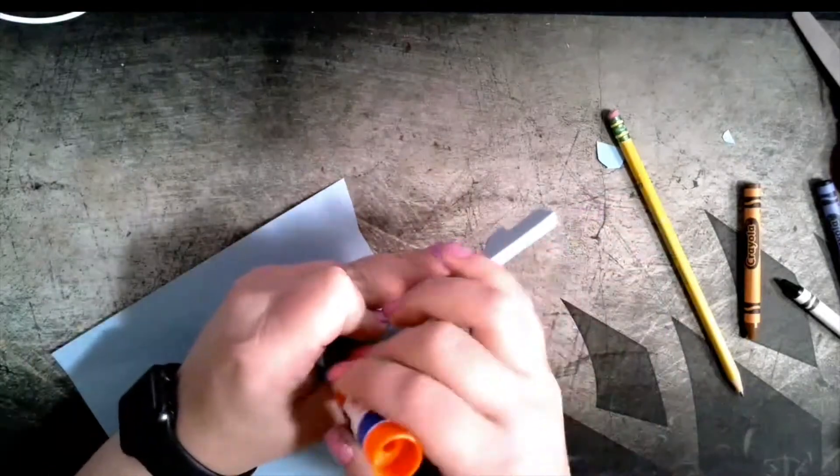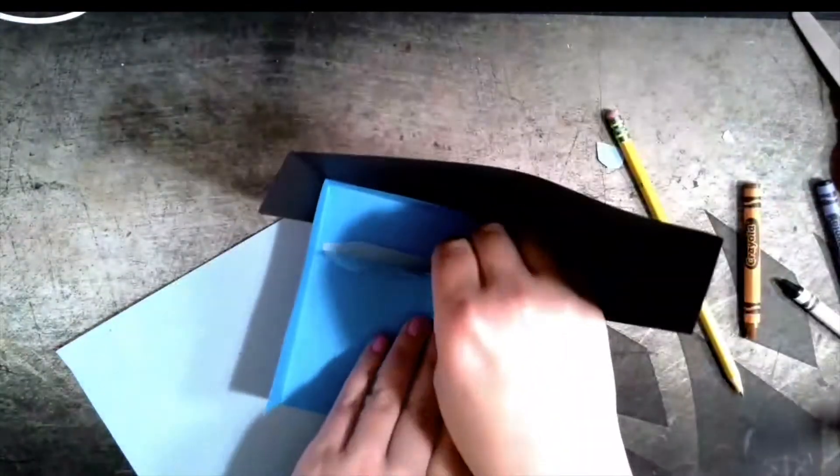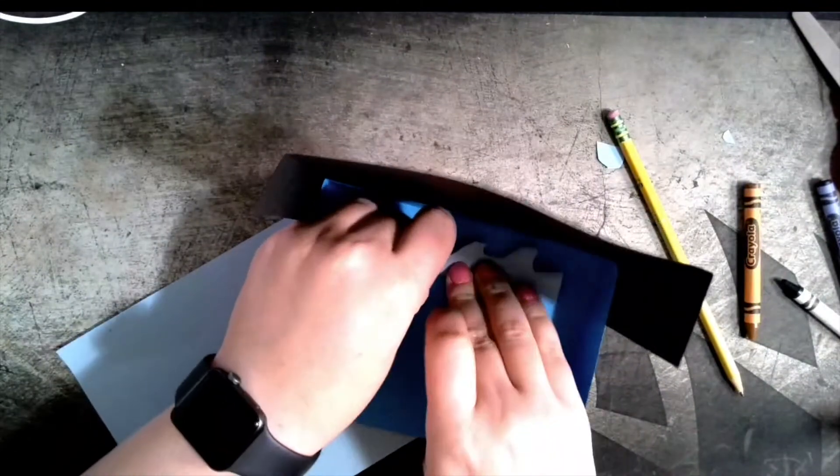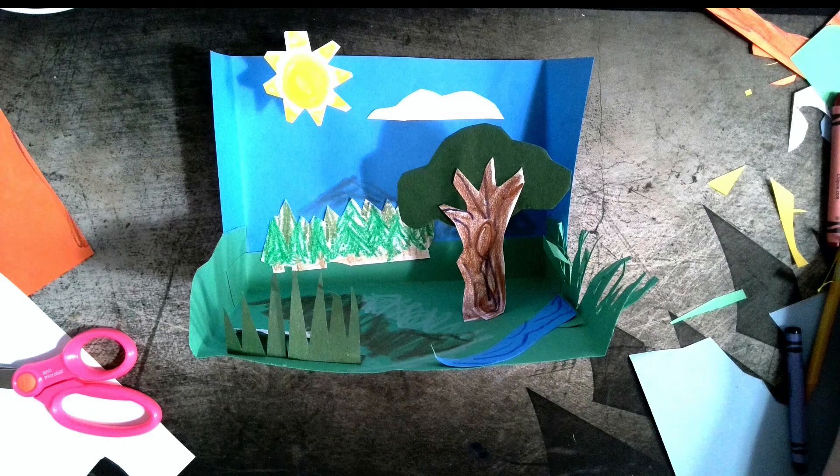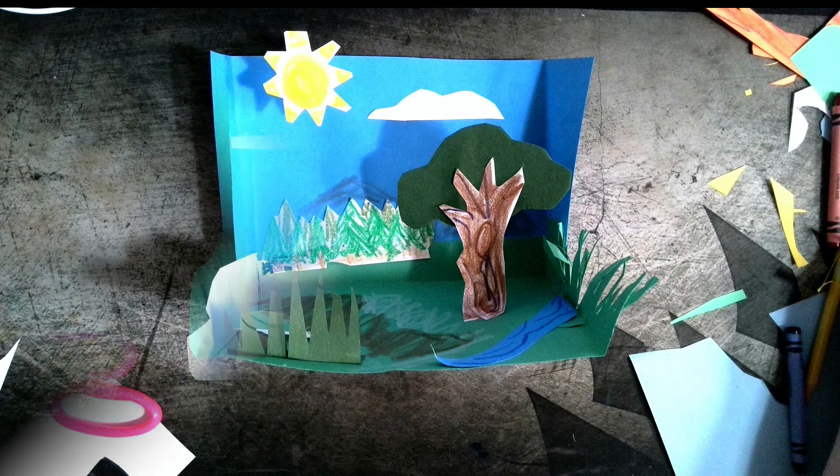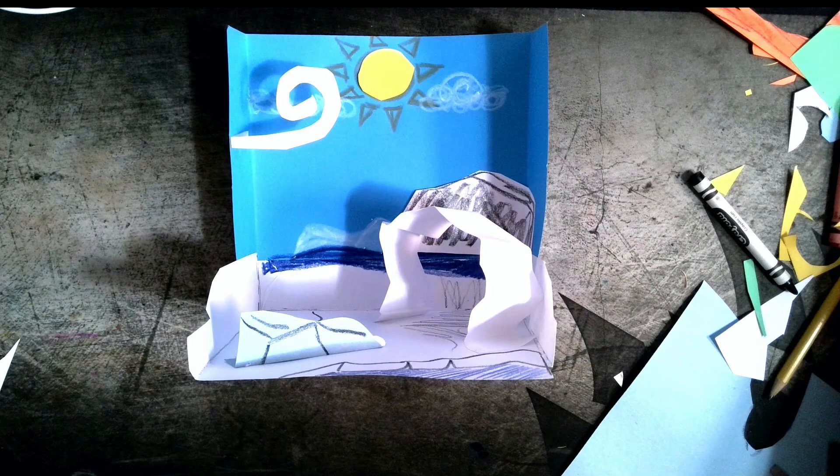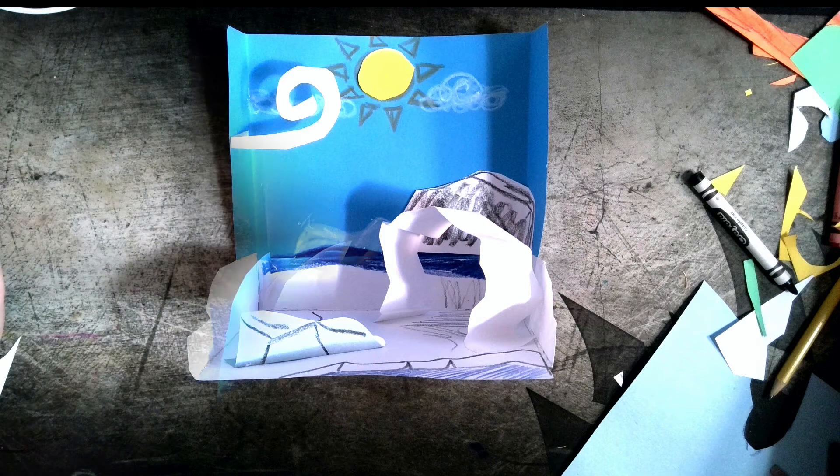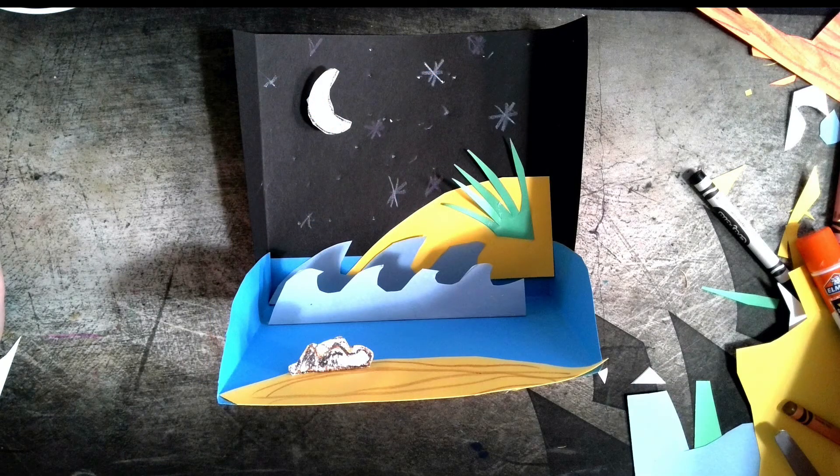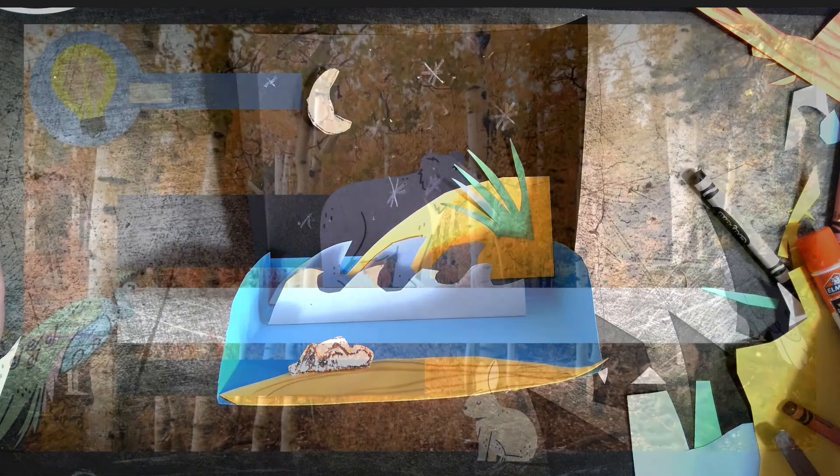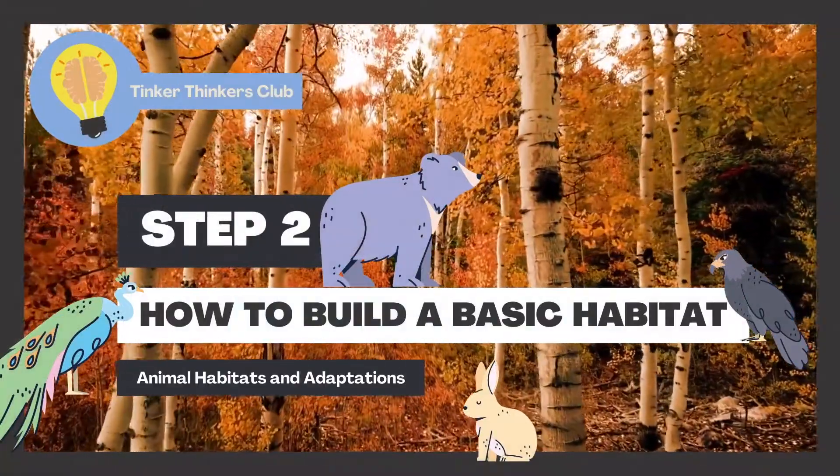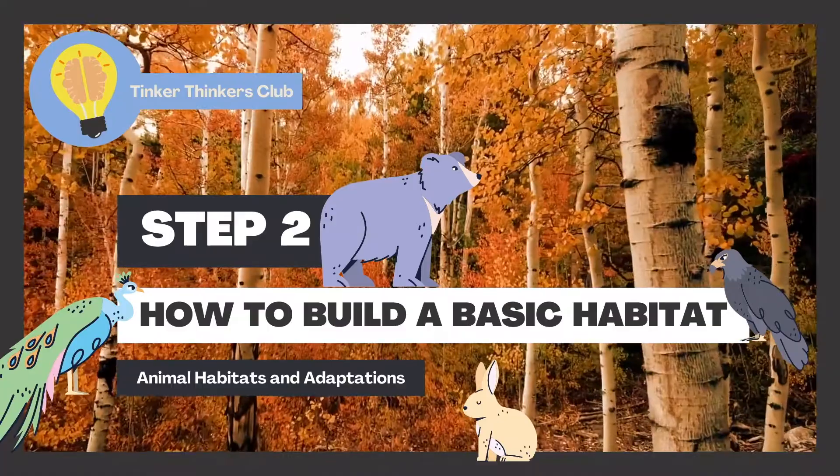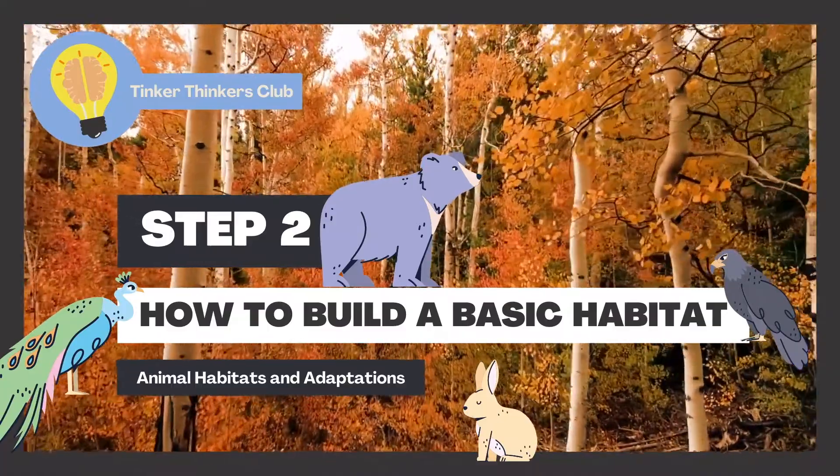Think about what pop-up objects you would like to add in your own habitat. Maybe it's not ocean. Maybe you want to learn how to make a tree stand up or how to make grass. You can also use pop-outs to make caves, rocks, or sand.